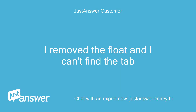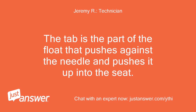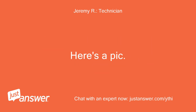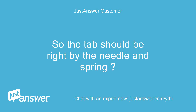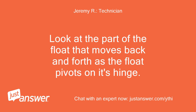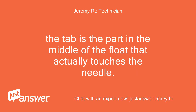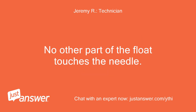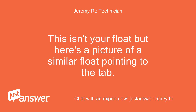I removed the float and I can't find the tab. The tab is the part of the float that pushes against the needle and pushes it up into the seat — here's a picture. So the tab should be right by the needle and spring. Look at the part of the float that moves back and forth as the float pivots on its hinge. The tab is the part in the middle of the float that actually touches the needle — no other part of the float touches the needle.